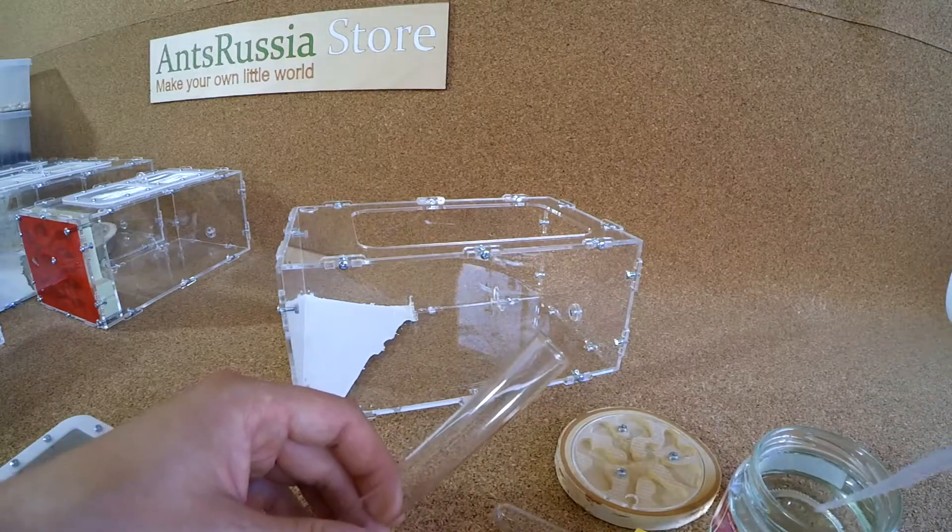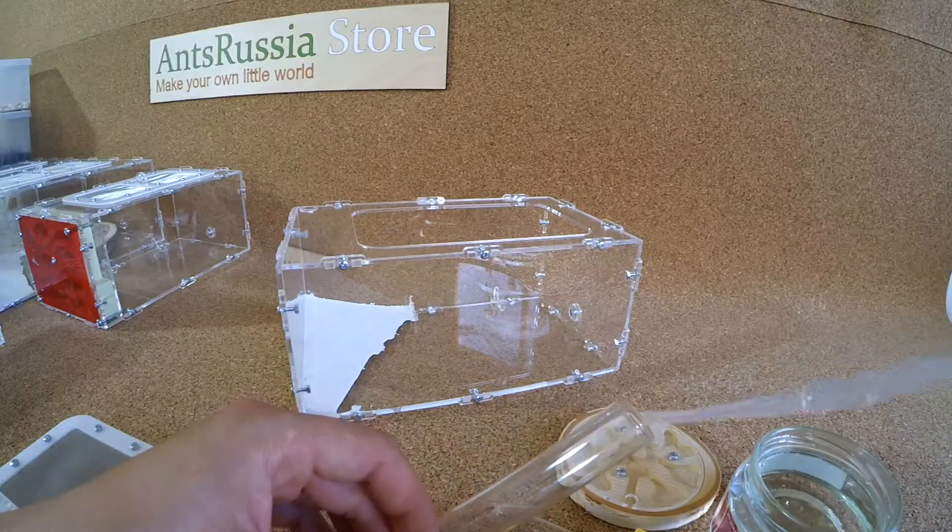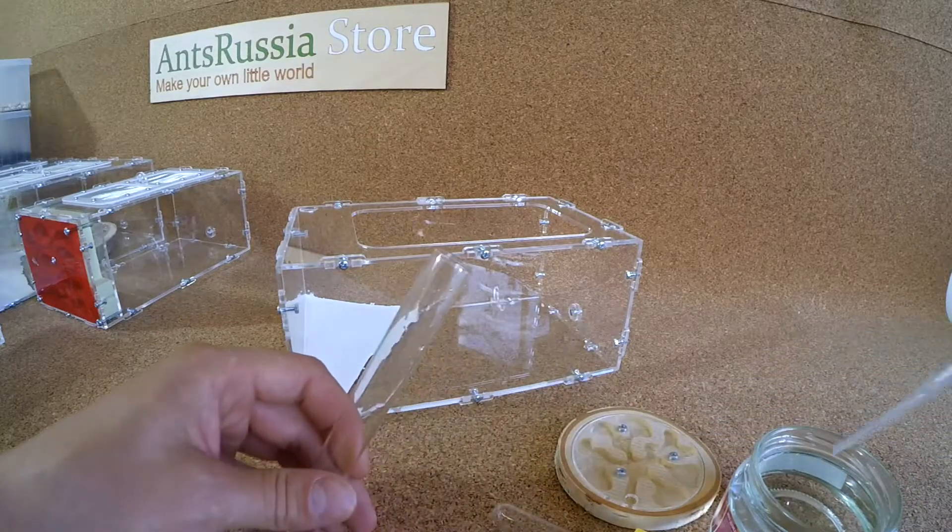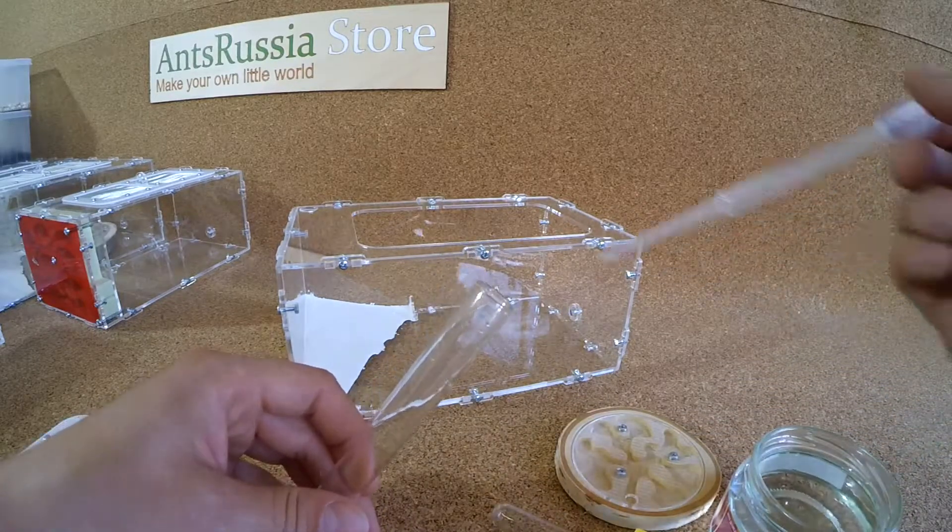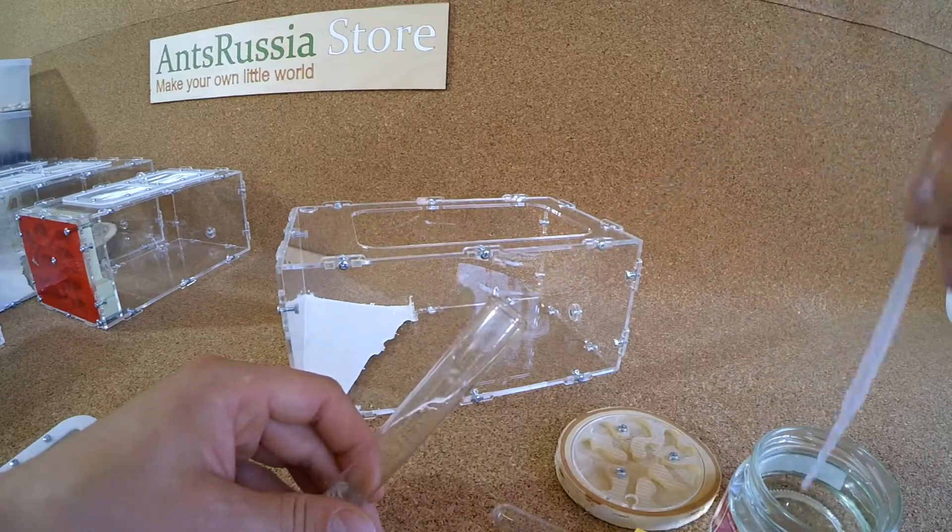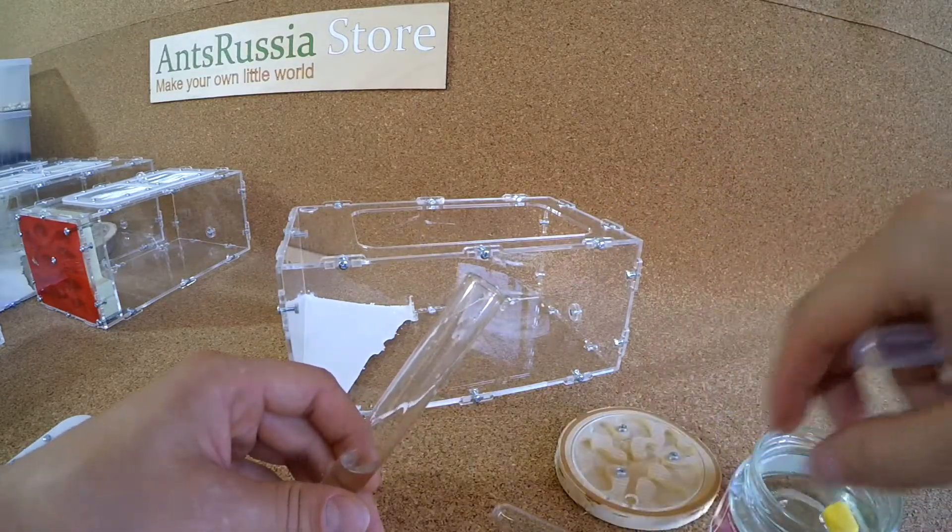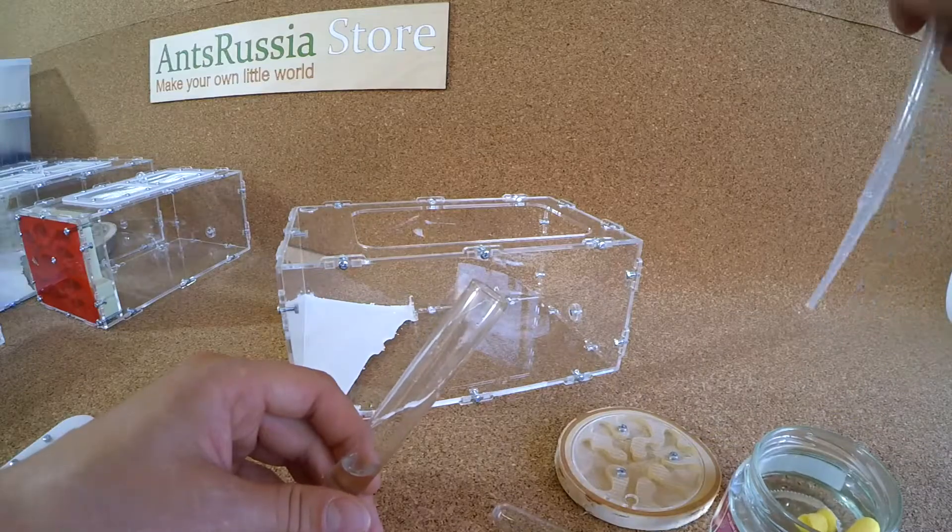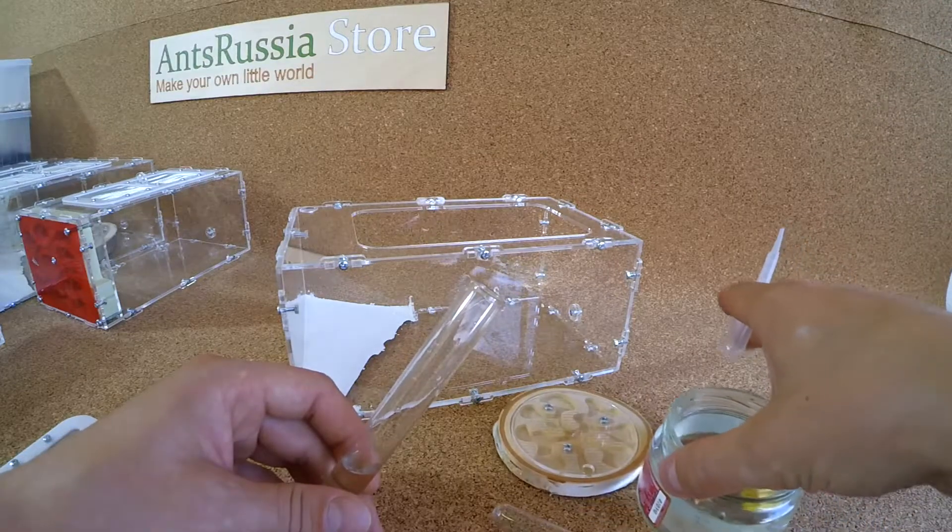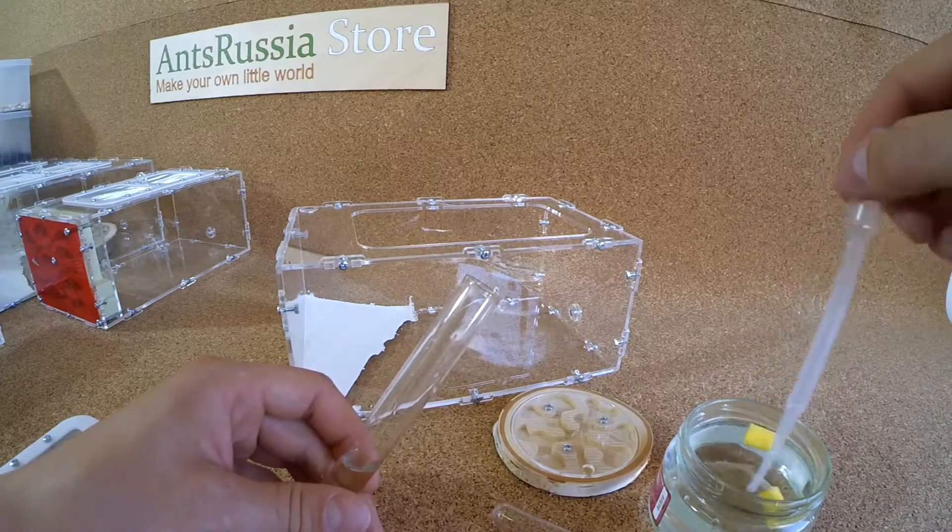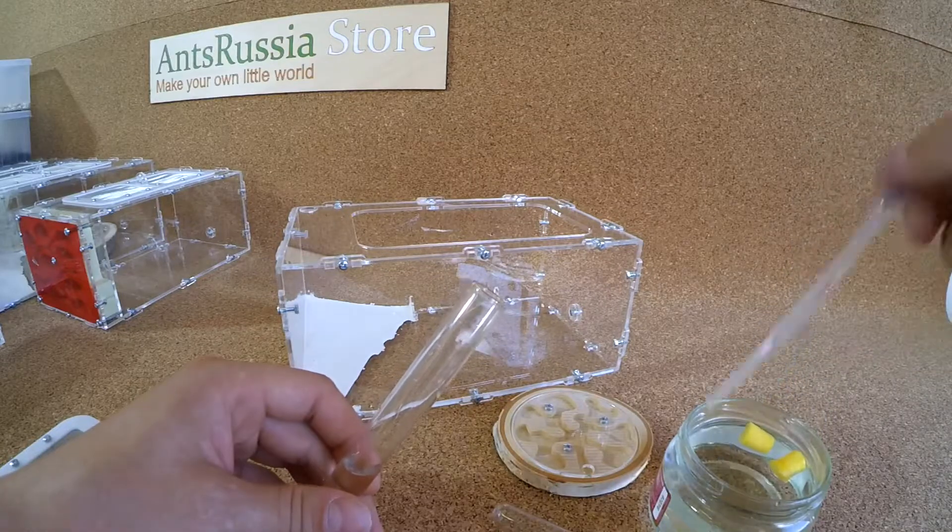We should fill the test tubes with boiled or bottled water. Otherwise the water will go moldy and this will affect our ants' well-being. Test tube sponges, while first time contacting with water, soak it up very slowly and therefore we'll put them into water right now.